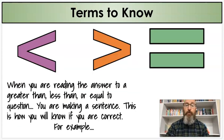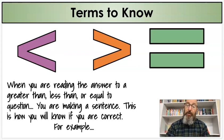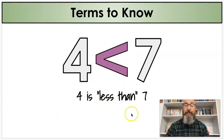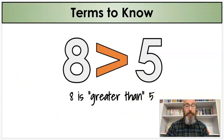The reason those terms are important is because when you're reading the answer to a greater than, less than, or equal to question, you're making a sentence, and this is how you know if you are correct. For example, four is less than seven, because it's smaller than seven, so we use the less than symbol. Four is less than seven — I know that sentence is correct, so I know my answer is correct.